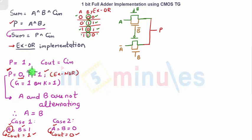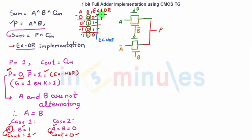Now I am going to implement the propagate_bar signal, which is nothing but an XNOR. For XNOR, the truth table is exactly opposite to XOR: 0,0 → 1; 0,1 → 0; 1,0 → 0; 1,1 → 1. So let us go ahead and implement this — it is going to be exactly opposite to XOR.